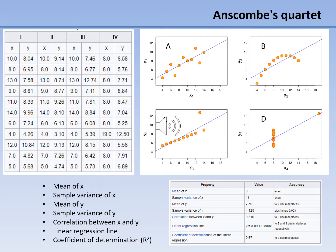Finally, the fourth graph on the bottom right shows an example where one outlier is enough to produce a high correlation coefficient, even though the other data points do not indicate any relationship between the variables.